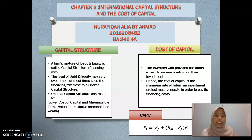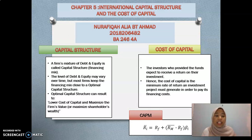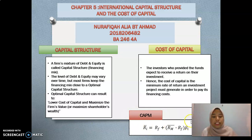Optimal capital structure can lower the cost of capital and it will increase and maximize the shareholder wealth. The second concept is cost of capital. Cost of capital is the return that investors who provided the fund will expect to receive. So cost of capital is the minimum rate of return an investment project must generate in order to pay its financing cost. The formula used is CAPM — the Capital Asset Pricing Model — to know the expected return on the stock investment.